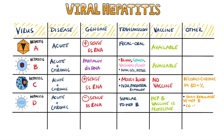This can occur in a situation known as co-infection, where an individual contracts both hepatitis B and hepatitis D simultaneously, or a super-infection, where an individual who already has chronic hepatitis B becomes infected with hepatitis D. The prognosis in these scenarios is worse than having hepatitis B alone.